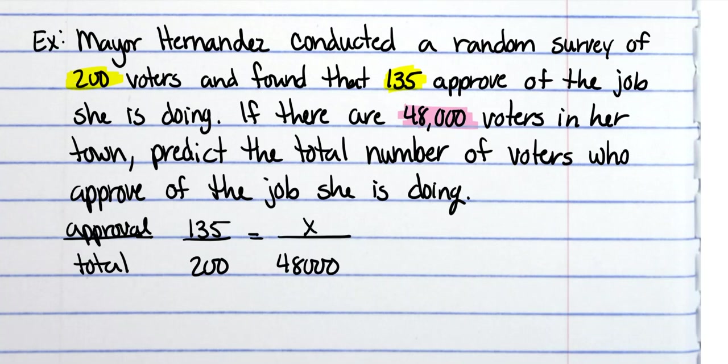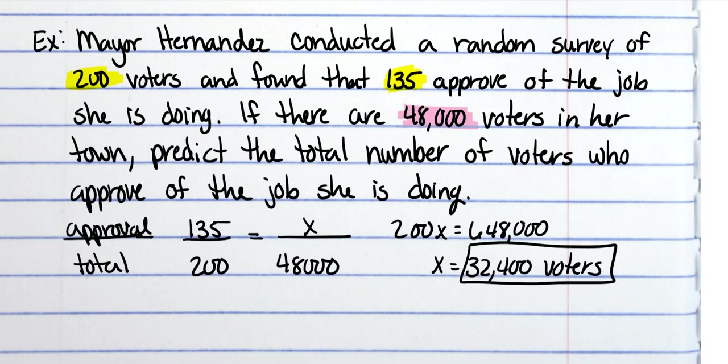So cross multiply. You end up with 200 times x is equal to 135 times 48,000, which is 648,000. Then divide both sides by 200 and you end up with 32,400 voters. And that is the end of our notes.